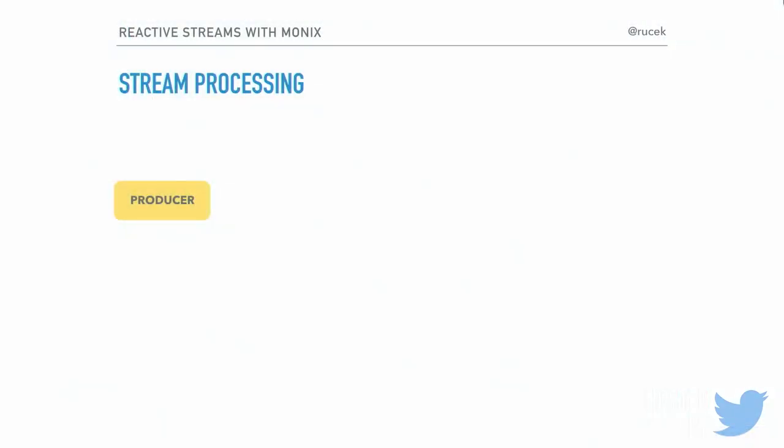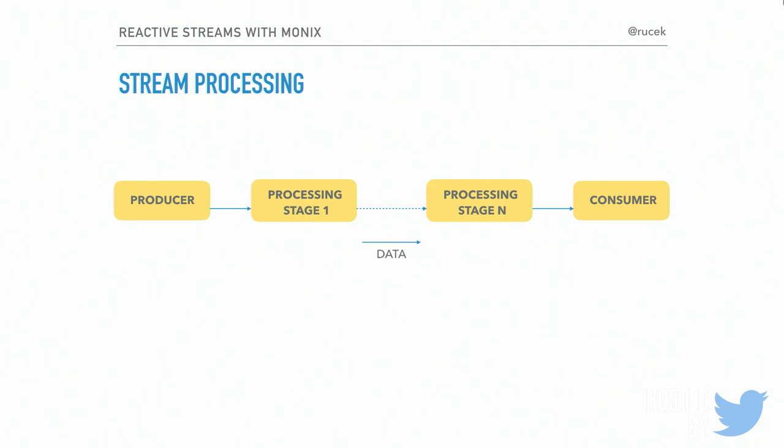Like every session here, I'm going to start with a reactive streams 101. In a stream processing pipeline you basically have some source of your data — you can call it a producer — you have a destination for your data which you can call a consumer, and you have a number of stages in the middle that process your data. Data flows from left to right, from the producer through the stages to the consumer.